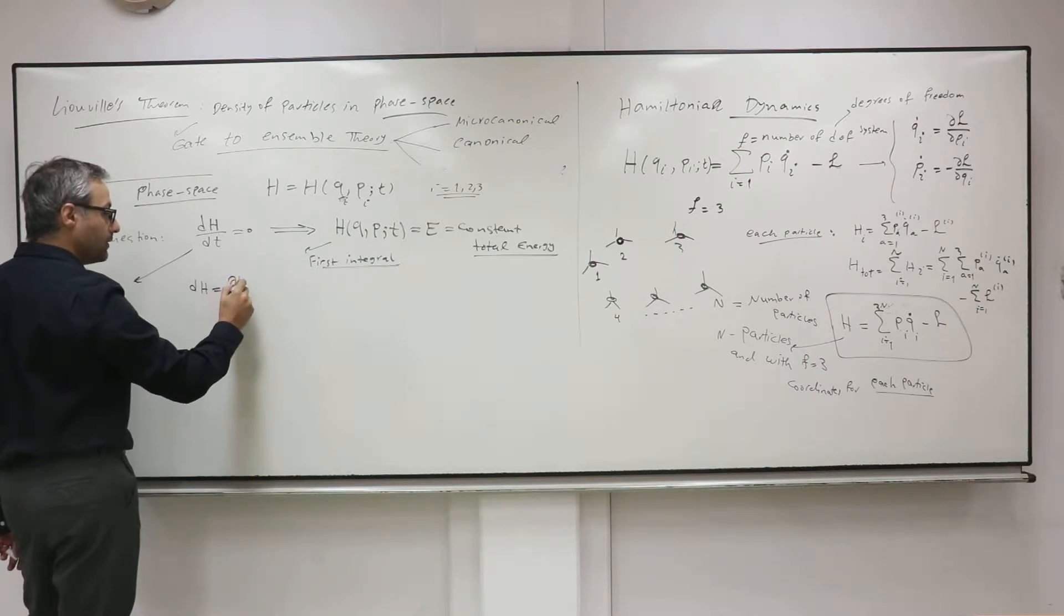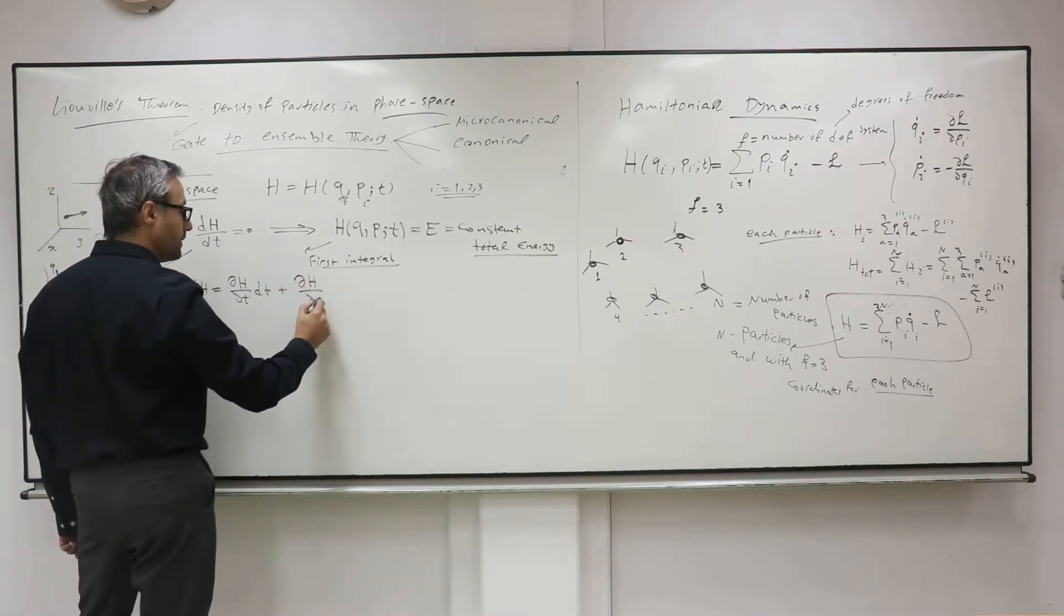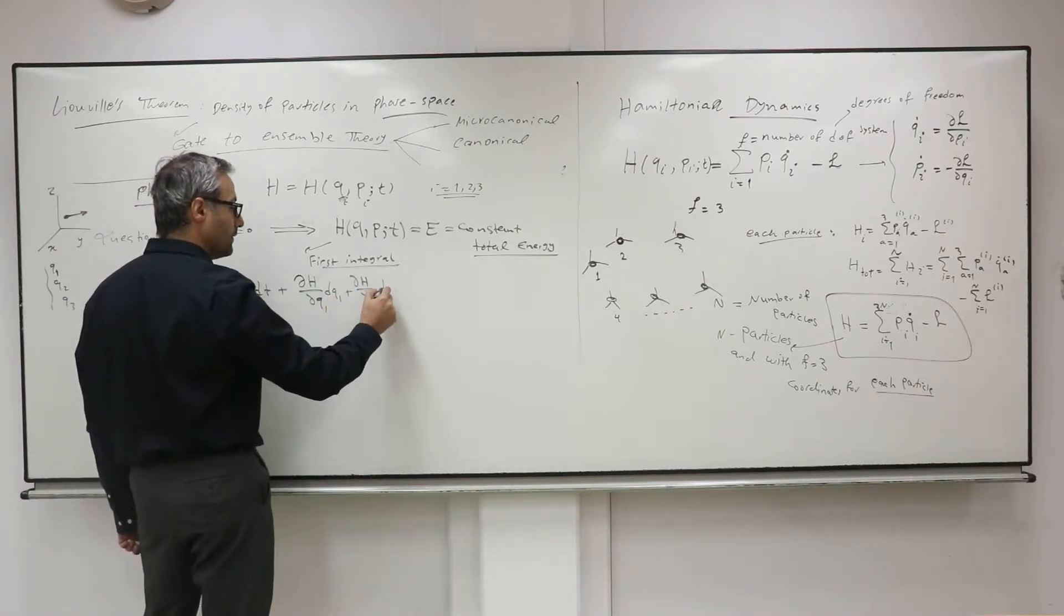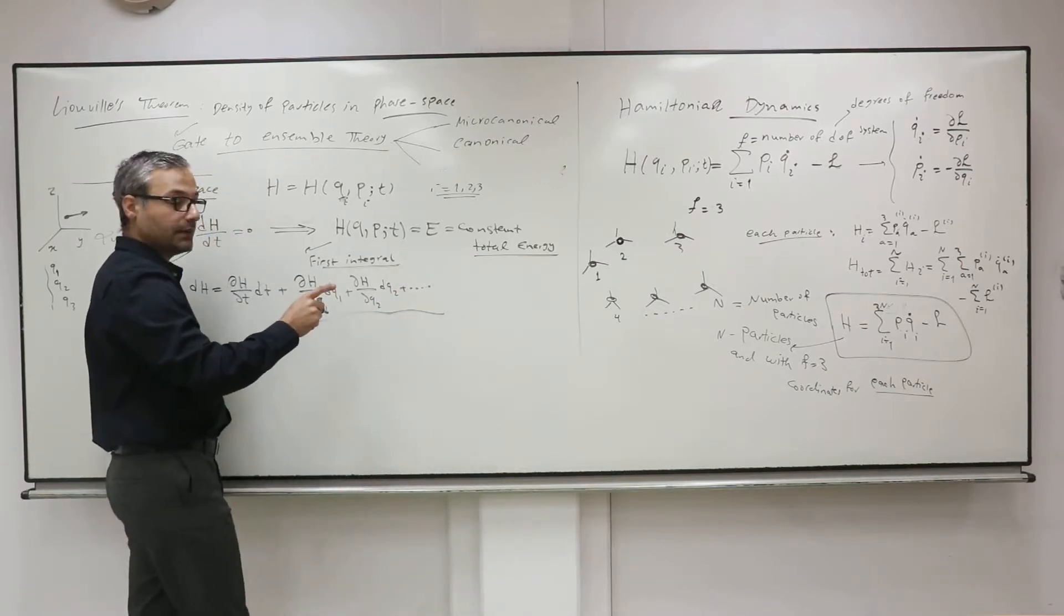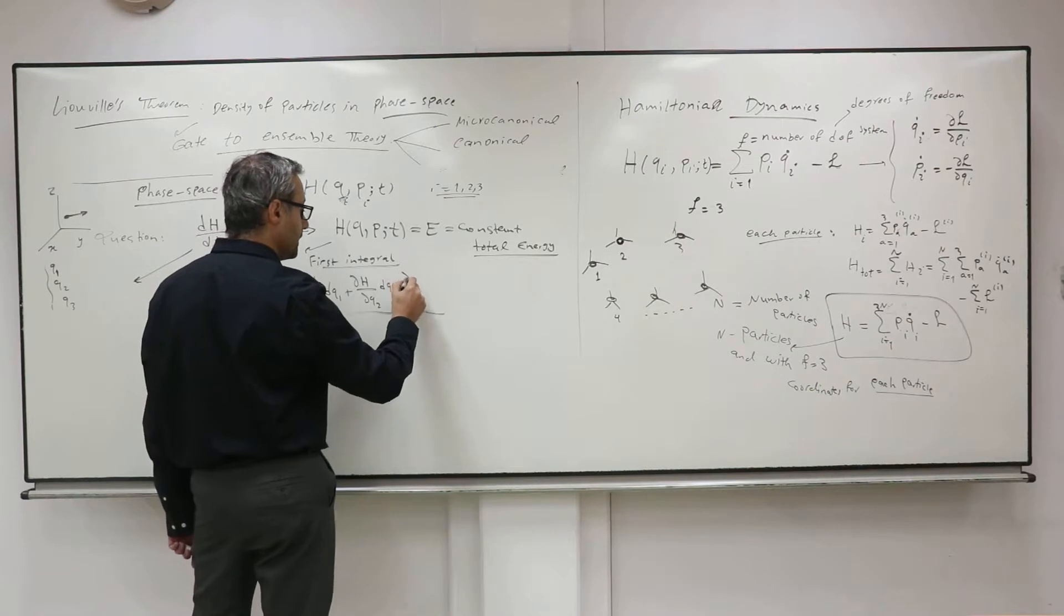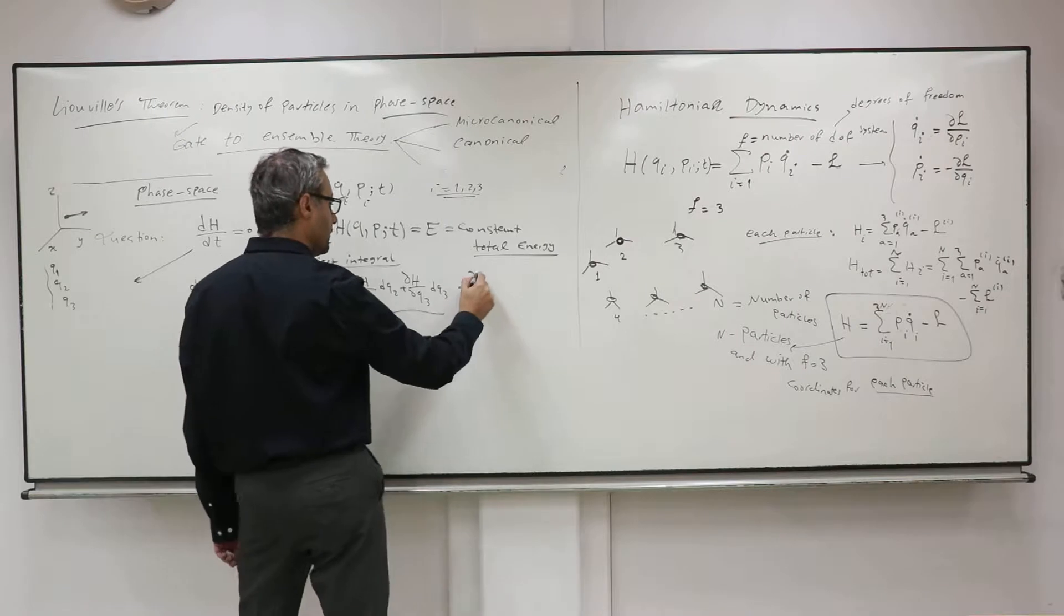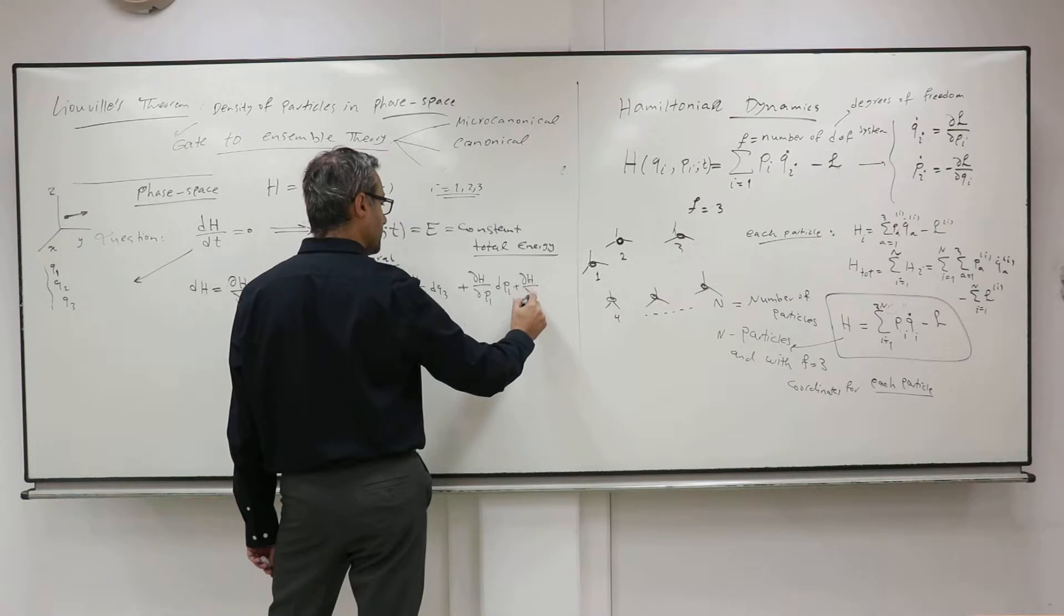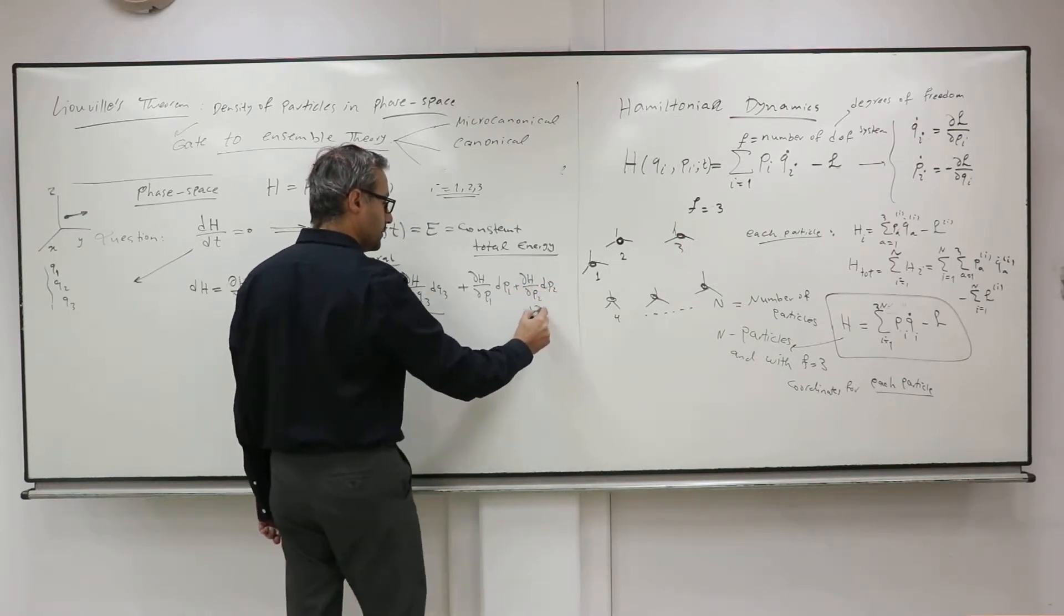So it's partial derivative of H with respect to t, ∂H/∂t plus partial derivative of H with respect to Q1, dQ1/dt. Partial derivative of this, dQ2/dt. And how many coordinates you have? For example, if you have three coordinates, we need to stop at that here. Plus ∂H/∂P1, dP1/dt, ∂H/∂P2, partial derivative of that.